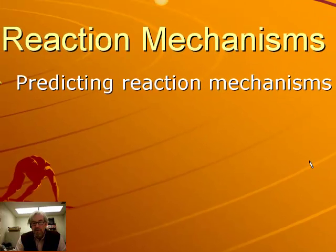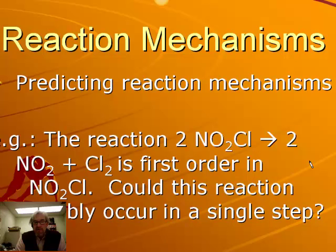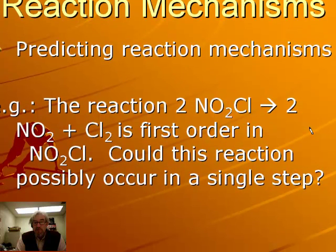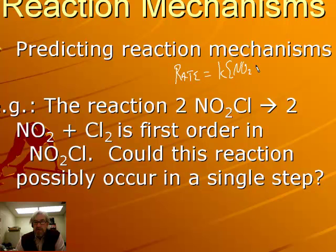For the reaction 2NO2Cl → 2NO2 + Cl2, experiments show it is first order in NO2Cl. Could it occur in a single step? If it were a single elementary step, the rate law would be rate equals K times [NO2Cl]^2, making it second order. But experiment shows first order, so this reaction cannot occur in a single step — it's not possible.